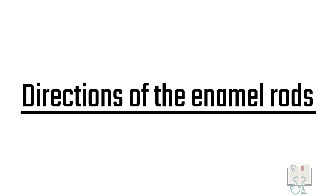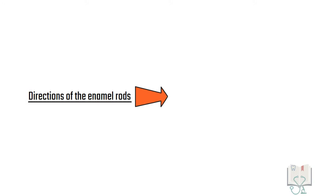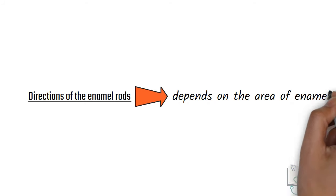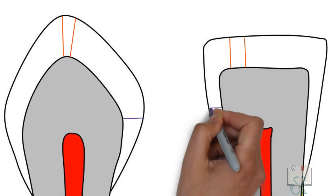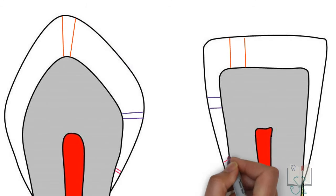Now coming to the directions of the rods. Their directions depends on the area of enamel where they are present. Like they are vertical in the cusp area and incisal ridge area. They are horizontal in the middle third and diagonal in the cervical third.